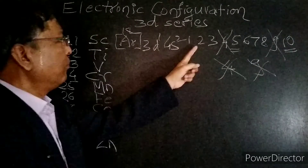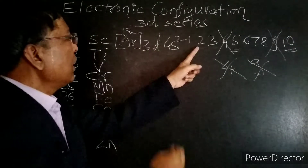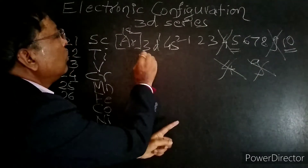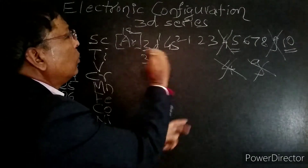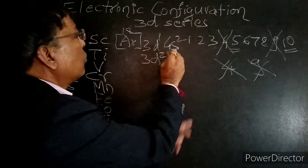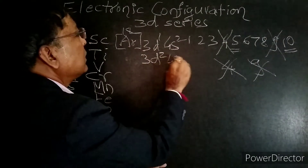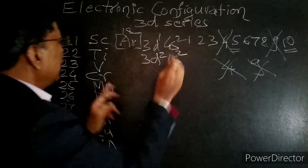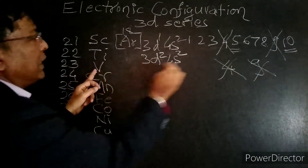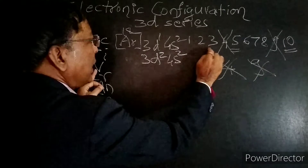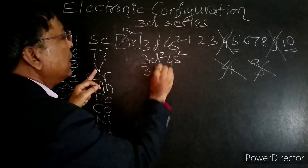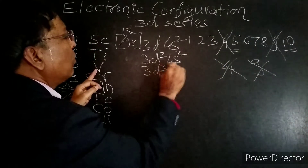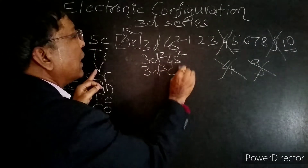Next, Titanium: [Ar] 3d2 4s2. Next, Vanadium: we have to take d3, so [Ar] 3d3 4s2.